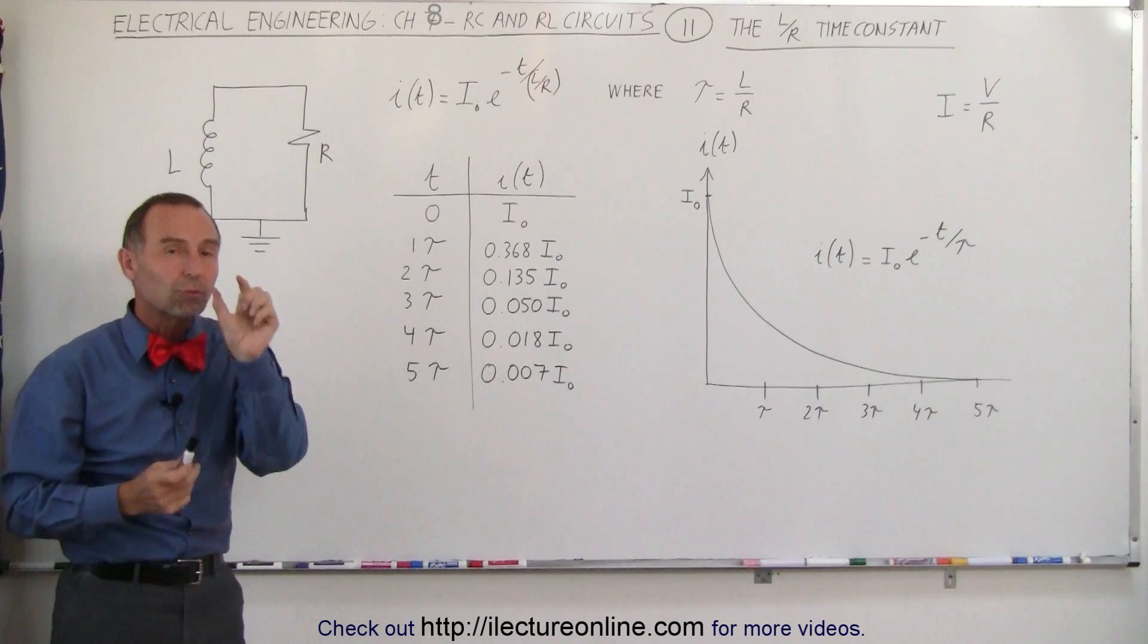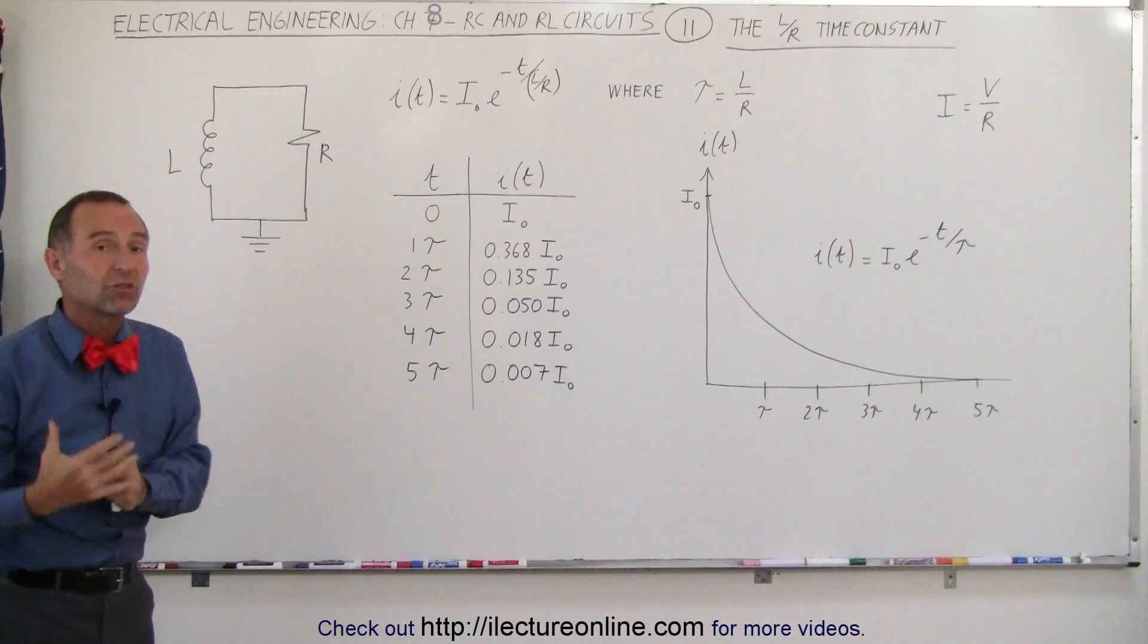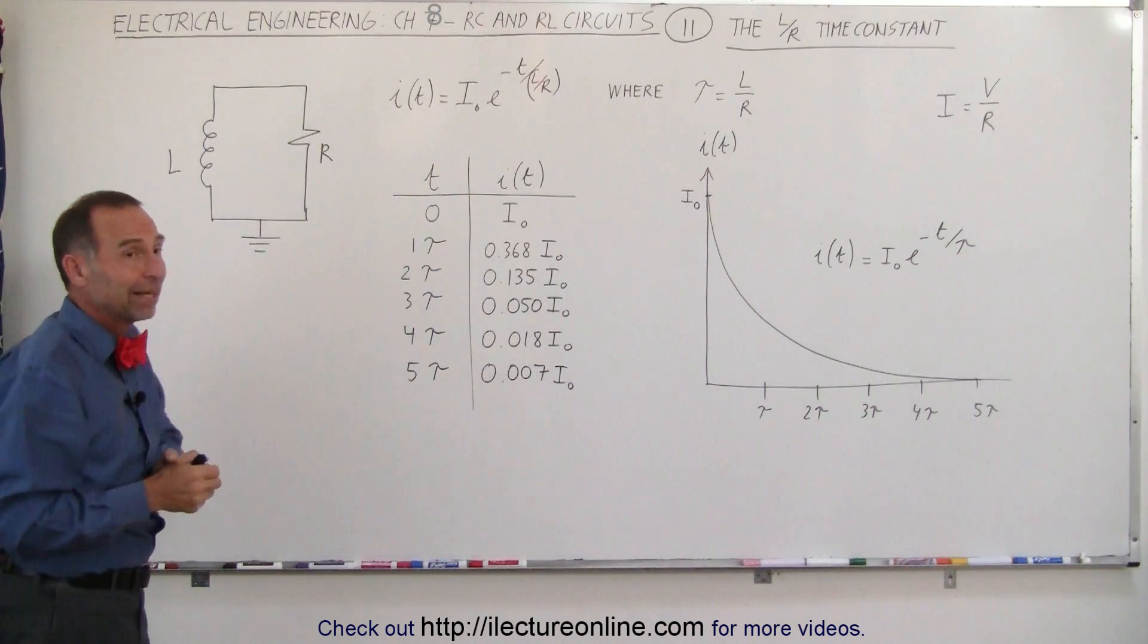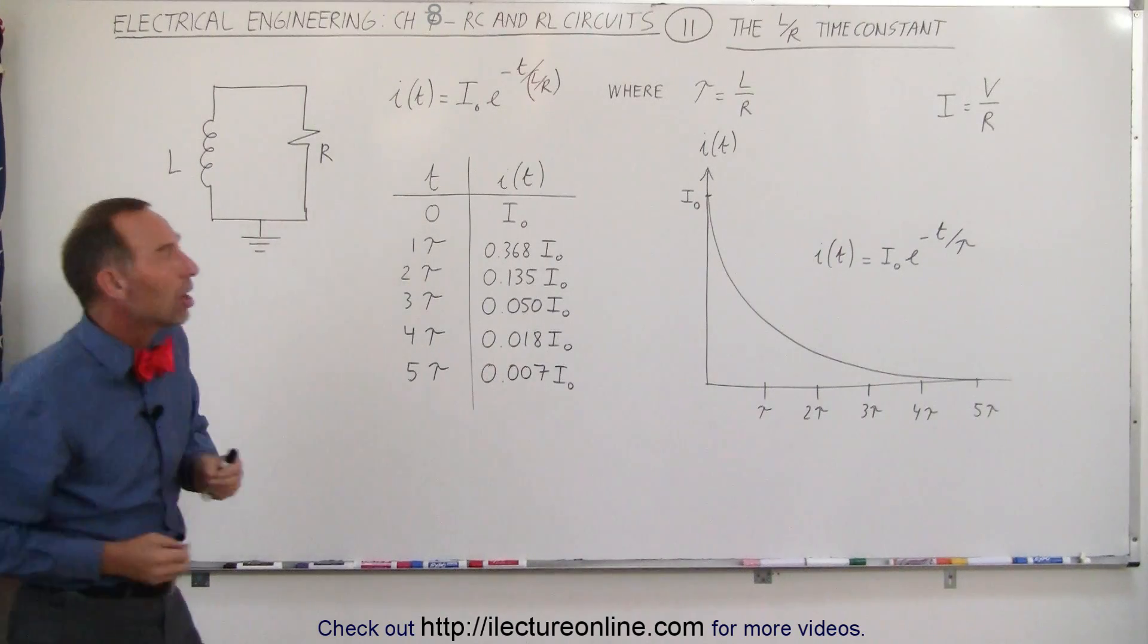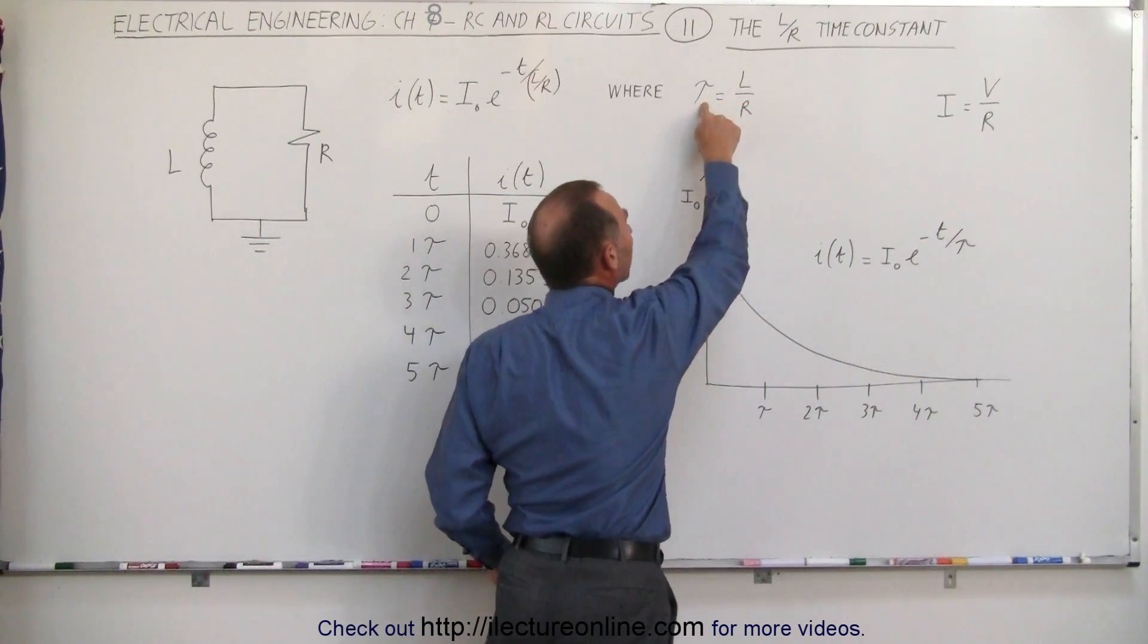And therefore since there's a smaller delta between the initial current, the smaller initial current because of the larger resistor, and the final current, presumably zero in this case, then the process will not take as long. And so therefore a larger resistor makes for a smaller time constant.